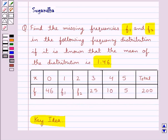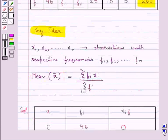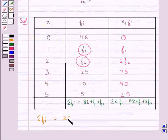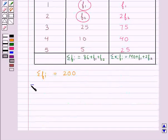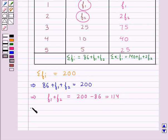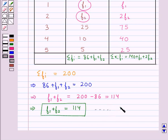In the given frequency distribution, we are told that the sum total of all frequencies is 200. That is, Σfᵢ = 200. So this means 86 + f1 + f2 = 200, which gives us f1 + f2 = 200 − 86 = 114. Thus f1 + f2 = 114. We take this as Equation 1.